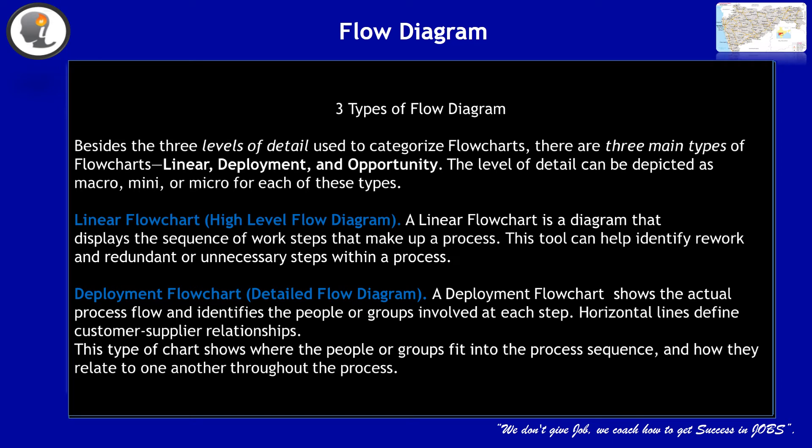There are three types of flow diagrams. The first is linear flow diagram or flow chart, also known as high-level flow diagram. A high-level flow diagram displays the sequence of work steps that make up a process, and can help identify rework and redundant or unnecessary steps within a process.